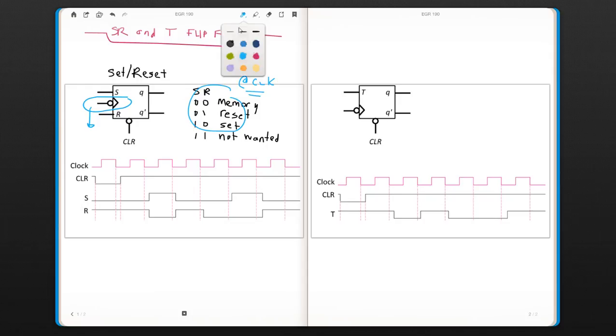So let's follow the timing diagram here. So at the very beginning, clear is 1, so it doesn't affect anything. So we don't know what our output is going to be. So we're just going to say this part, we don't know until this part. This is not determined.